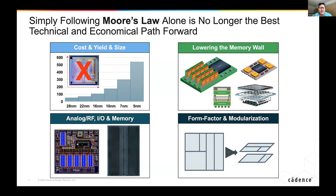Starting in the upper left: the most important reason people are pivoting to 3D HI is cost, which is tied closely to size and yield. Over the last few years in the SoC space, chips have been designed so big they've reached what's called the maximum reticle limit — too big to be manufactured with today's lithography equipment. That's one reason to start building multiple chips.